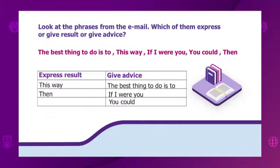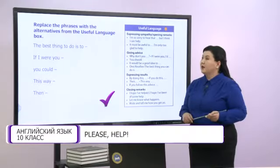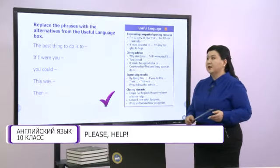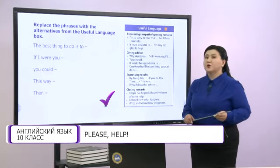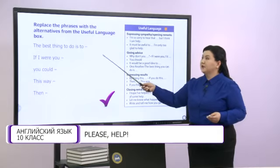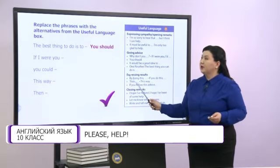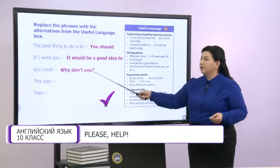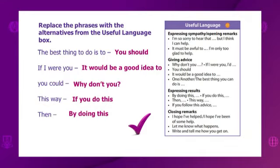The last phrase is 'Then.' Now replace the phrases with the alternatives from the useful language box. Please pay attention to the useful language box because you can use these phrases in your email. 'The best thing to do is to' — you can replace it with 'You should.' 'If I were you' — replace with 'It would be a good idea to.' 'You could' — replace with 'Why don't you?' 'This way' — replace with 'If you do this.' And 'Then' — replace with 'By doing this.'